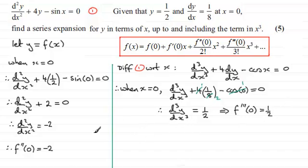So I just need to put my results now into here. And this will give us an approximation for y. So therefore, what we've got is that y is going to be approximately equal to f(0), which we've seen is 1/2. And then for the next term, f'(0), well, that is dy/dx when x is 0. So that's 1/8. So it's going to be +1/8 multiplied by the x.